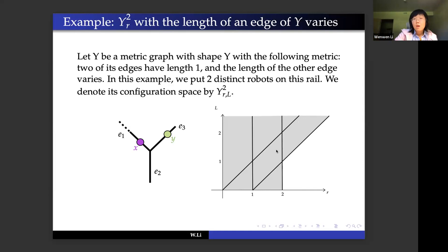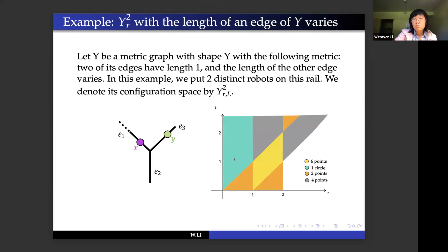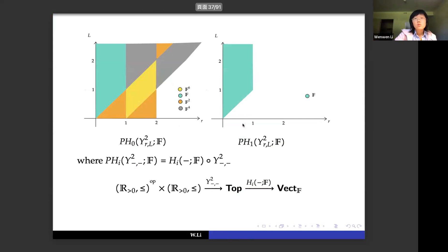We can calculate the homotopy type chamber by chamber. For the blue chamber, the homotopy type is S^1. We then apply H_0 and H_1 to each chamber to get the persistent module. The H_1 of this configuration space is an interval module and thus indecomposable. The H_0 is more complicated, and to figure out its indecomposable direct summands, we construct the following structure.